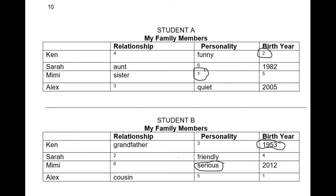Here is an example of using them during the activity. 'What is Mimi's personality?' 'She is serious.' 'I see.' 'When was Ken born?' 'He was born in 1953.' 'I'm sorry, what did you say?' 'I said he was born in 1953.' 'Okay, I got it.'